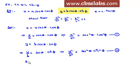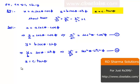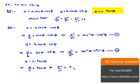Consider the third equation: z is equal to c tan theta, which implies z by c is equal to tan theta. That further implies, squaring on both sides, we get z square by c square is equal to tan square theta. Let this be equation number 3.